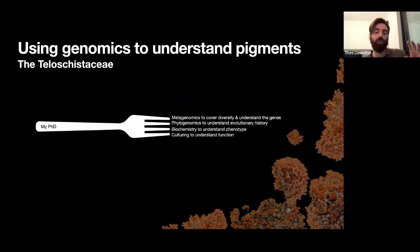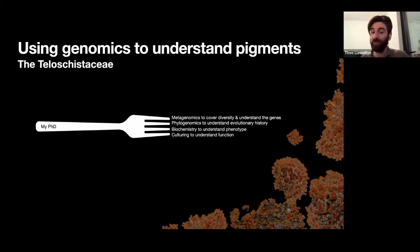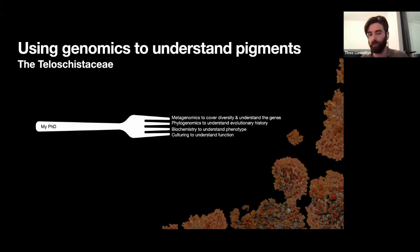My PhD is trying to combine these methods to answer this question. I've gone for a four-pronged approach. The first is using metagenomics to cover the diversity of this family — if I want to do a comparative evolution study on a family this large, I need metagenomics. With this genetic data, I'm trying to pull out the genes related to anthraquinone production and see how they evolved.